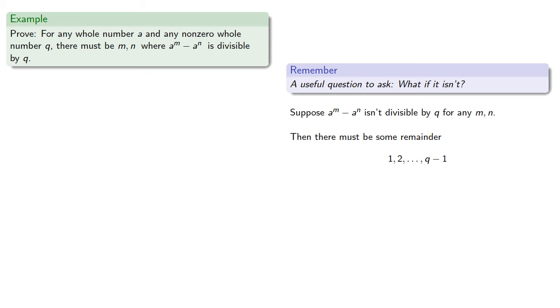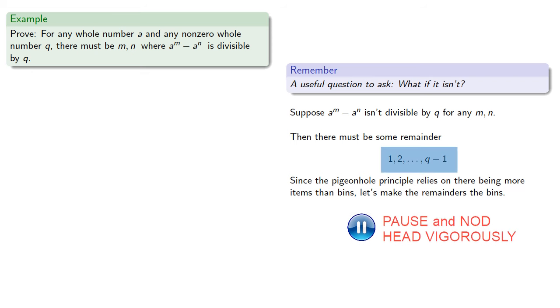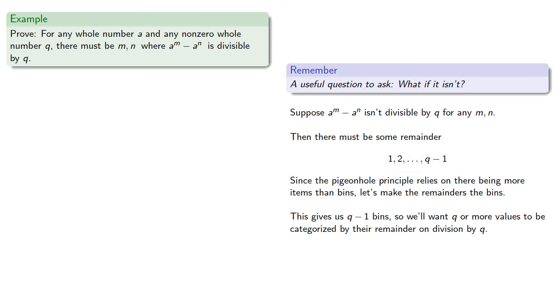Now since the pigeonhole principle relies on there being more items than bins, let's make these remainders the bins. This gives us q minus 1 bins, so we'll want q or more values to be categorized by the remainder on division by q.